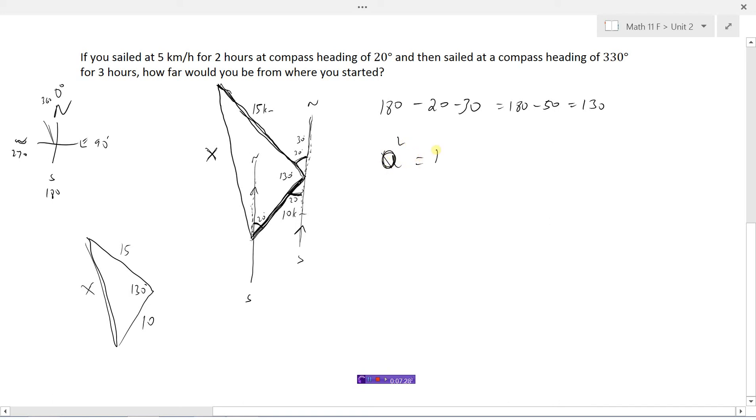a squared equals b squared plus c squared minus 2 times b times c times the cosine of the angle in between them. So our a we're calling x in this question. So x squared equals b squared plus c squared minus 2 times b times c times the cosine of the angle in between them.